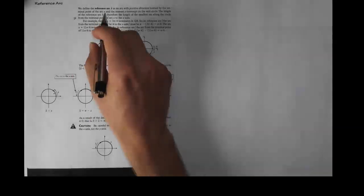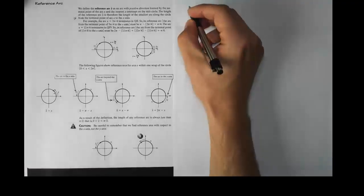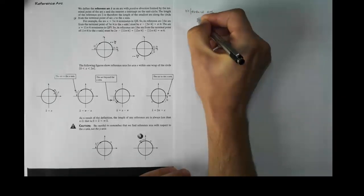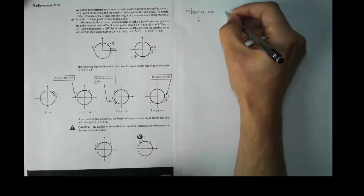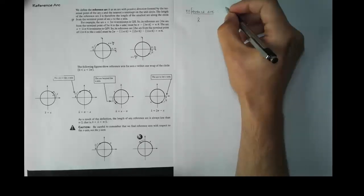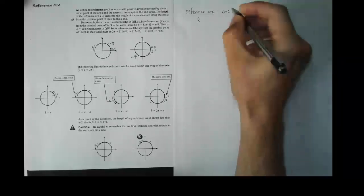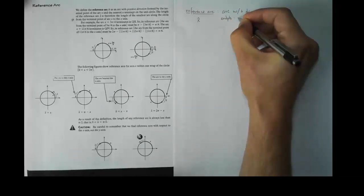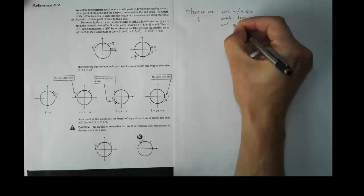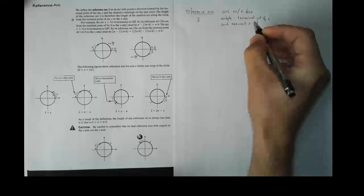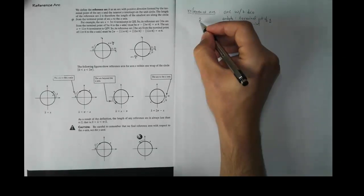We define the reference arc x-hat — I clearly need to take notes on that definition. So, reference arc, and it's called x-hat, although I'm not sure what that means. A reference arc x-hat is an arc with positive direction formed by the terminal point of the arc x and the nearest x-intercept on the unit circle. Its endpoints are the terminal point of x and the nearest x-intercept. So x is the name of an arc, and x-hat is the name for this new related thing we're making.